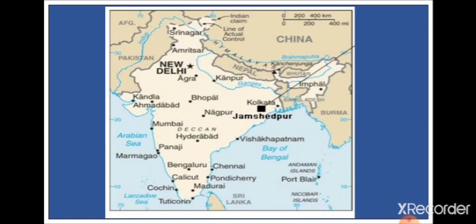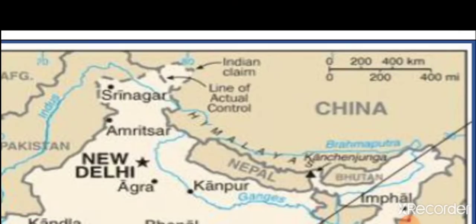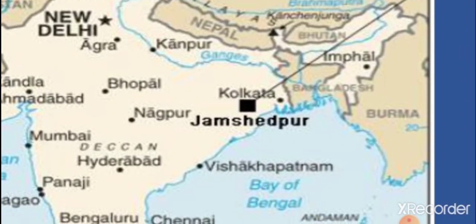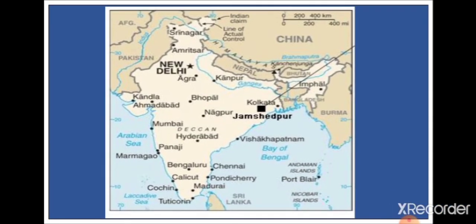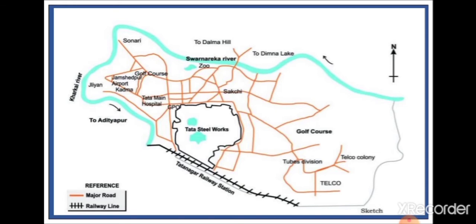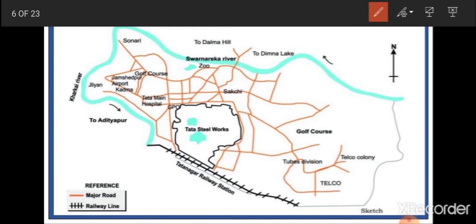Now let us look at the map of India where Jamshedpur is located. As you can see, this is the location of Jamshedpur, and nearby you can see Kolkata and Odisha. Now looking at the detailed map, this area is surrounded by two rivers: one is the Subarnarekha river and the other is the Kharkai river. As you can see in the picture, this is the Subarnarekha river and this is the Kharkai river, and here is the Tata Iron and Steel Industry.